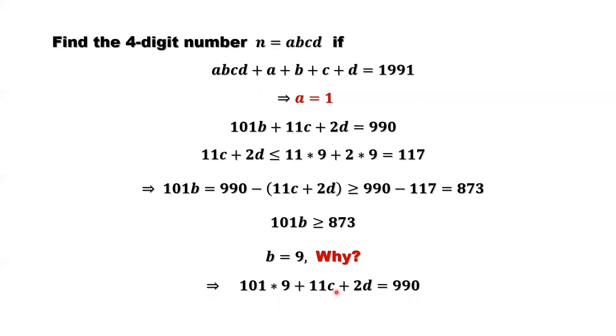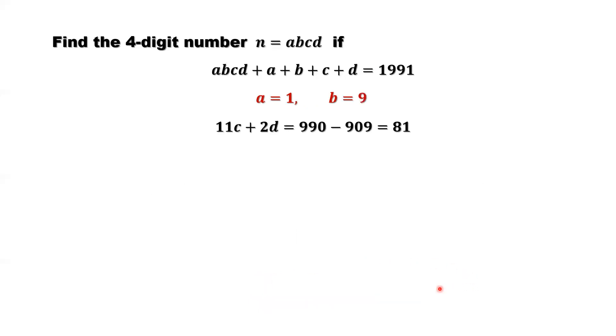B equals 9. Simplify this one. We have two more parameters, C and D to figure out. So move this to the right hand side. Simplify. 11C plus 2D equals 81. Now look at this situation. 2D is bounded by 18 and 0. So what's the maximum value for 2D? When D equals 9. 2 times 9 equals 18. That's the maximum value for 2D. The smallest value, D, can be 0. 2 times 0, that's 0. So 2D is in between 0 and 18. Move 2D to the right hand side. We can find the range, upper bound and lower bound for 11C.